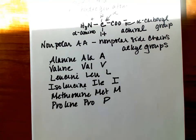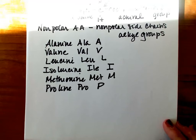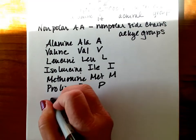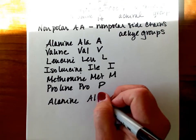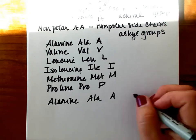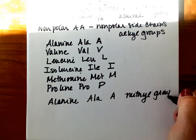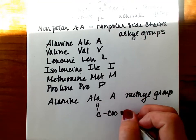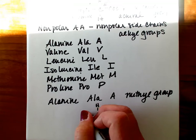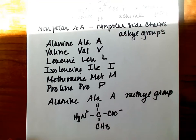So let's take a look at the individual amino acids with their structures, starting with alanine — ALA, A. Alanine has a methyl group as its side chain. So we have our alpha carbon, alpha carboxyl, alpha amino group, which of course is protonated at physiological pH, and a methyl group as the unique R group.